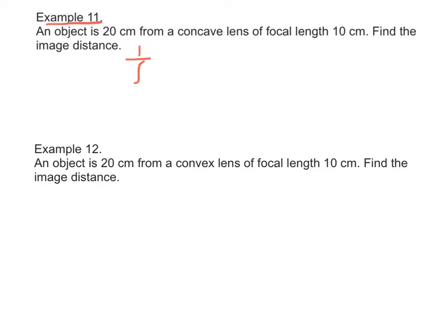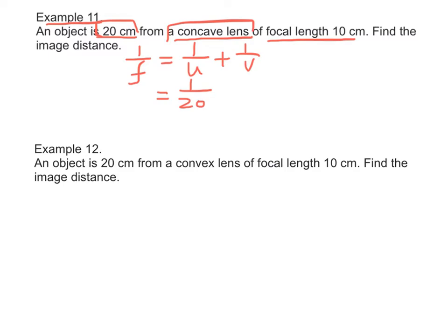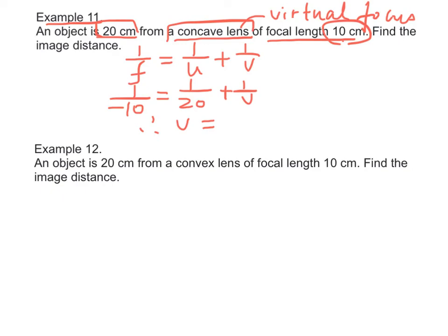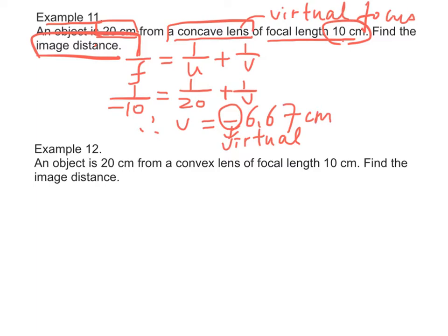Example 11: Using the lens formula 1/f = 1/u + 1/v, the object distance is 20 cm, so u = 20 cm. Since this is a concave lens of focal length 10 cm, a concave lens has a virtual focus, which means f = −10. Solving the equation gives v = −6.67 cm. The negative sign means the image is virtual, with image distance equal to 6.67 cm.